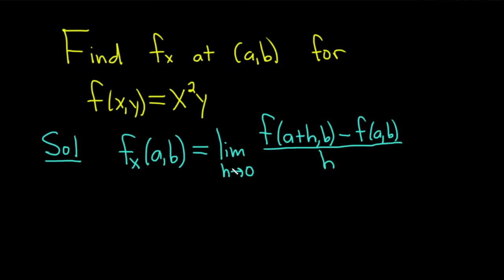So basically it's just like the formula for a single variable, except you have an additional variable. Notice that we're only adding the h to the a here. We're leaving the b fixed, which kind of mirrors what's happening when you actually compute this algebraically, right?